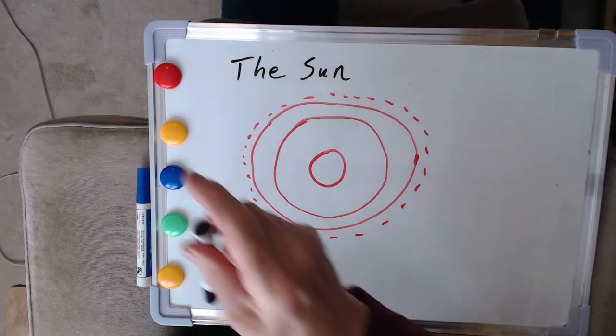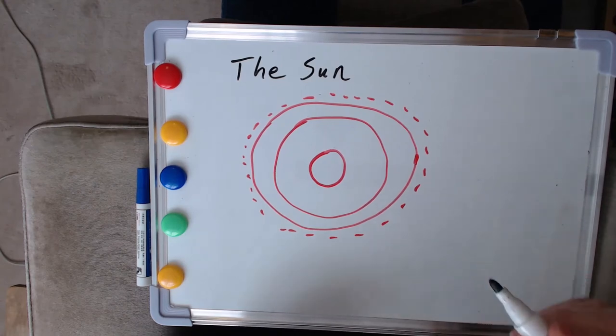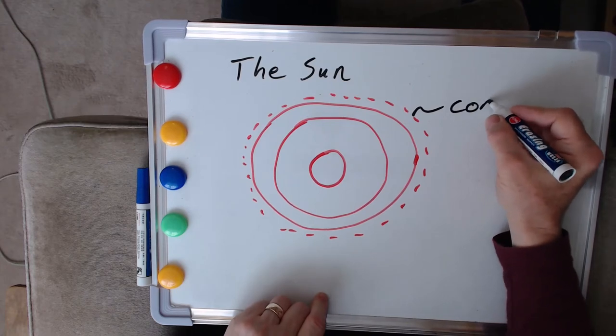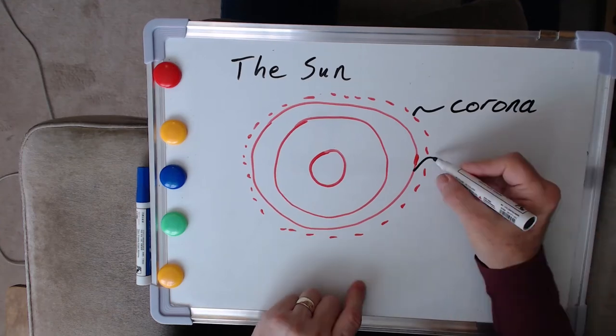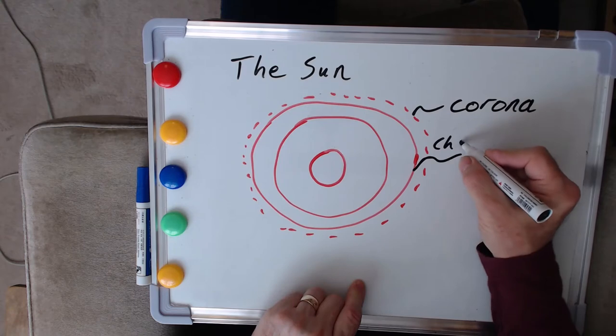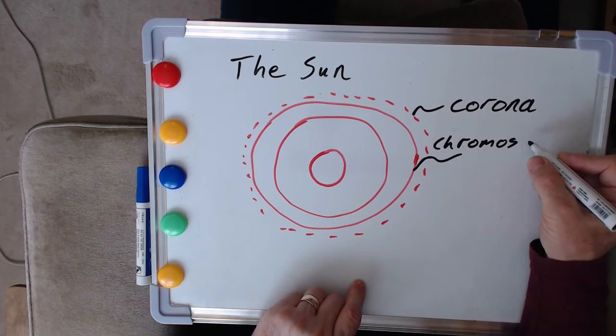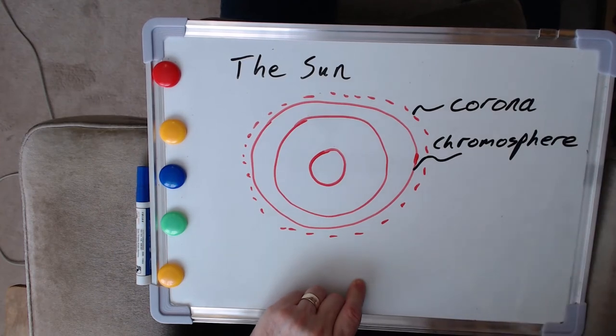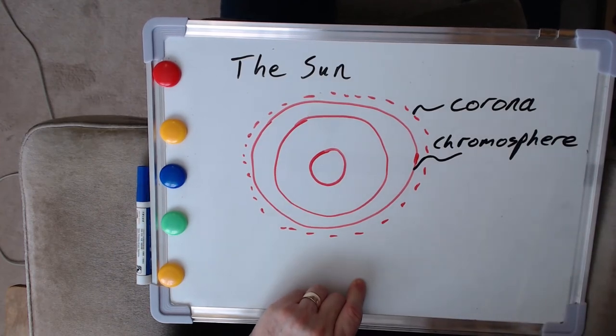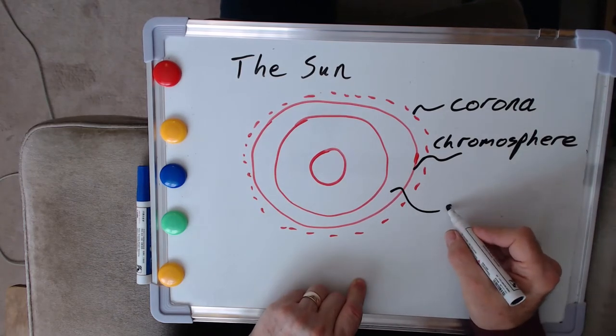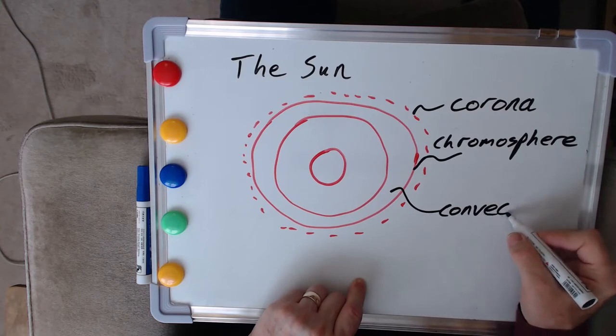So let's add a few labels and details to this. This outer region, if we start from the outside and work inwards, is called the corona. This near-surface layer is usually referred to as the chromosphere. This is what we associate with the colors that we see. And then in this layer here, it's the convection zone.